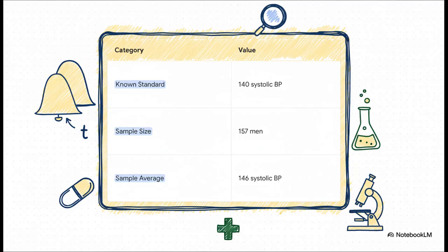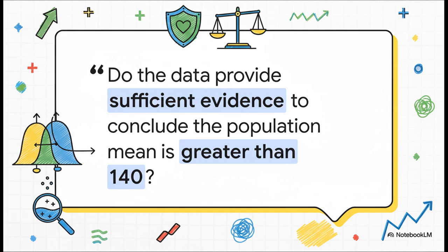Here's a perfect example to make it real. Let's say health officials know that a standard systolic blood pressure is about 140. Then, researchers go and test a sample of 157 men in a specific town and they find their average is 146. Okay, it's higher, but is that six-point difference actually meaningful or is it just a random blip? The one-sample T-test is exactly what researchers would use to answer this. It crunches the numbers and calculates the probability that a difference that big could have happened by random chance alone. This helps them decide if that community truly has higher-than-average blood pressure.